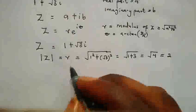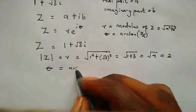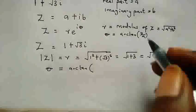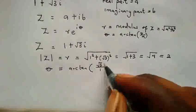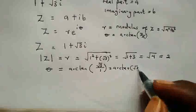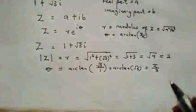So next, we have our argument theta, which is equal to the arctan of B all over A. Here our B is square root of 3 over A which is 1. So this is equal to arctan of square root of 3 and this is exactly equal to pi all over 3.